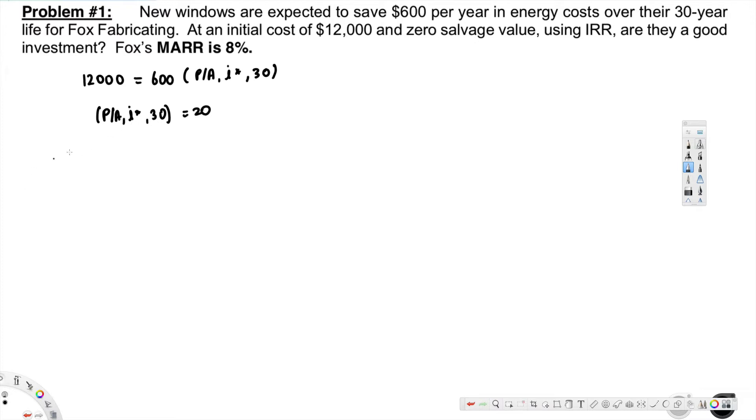Now from interest table, we have to look at the values that's close to 20. And if you look at P/A, 2%, 30, that is close to 20. In the table you will see that is 22.396. And since this is not exactly 20, we have to look at the below value as well. The below value is P/A, 3%, 30, that is 19.6.